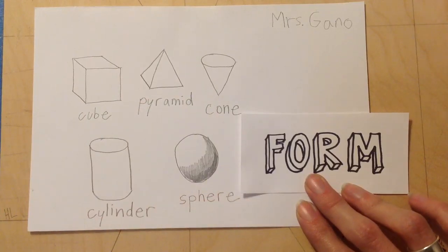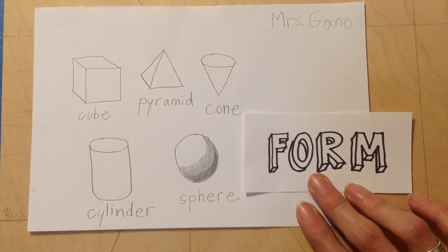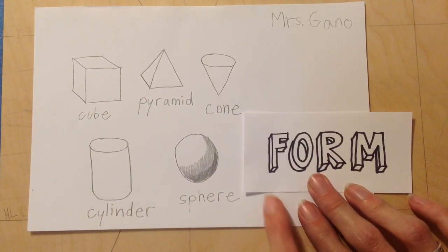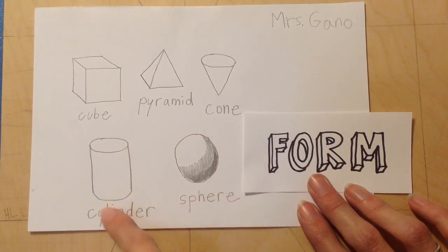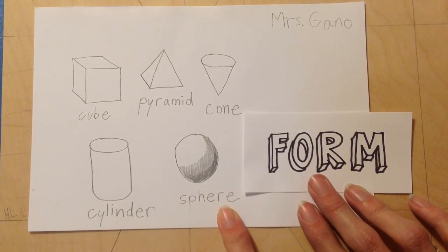Now I want you to turn to the person next to you and tell them what the five different basic forms we just learned about are. And also try to describe what they look like.